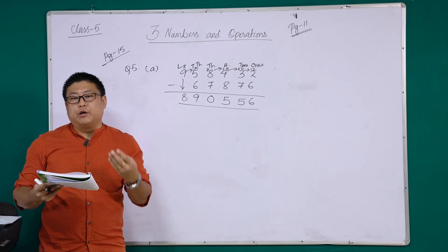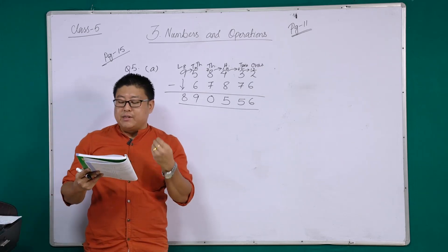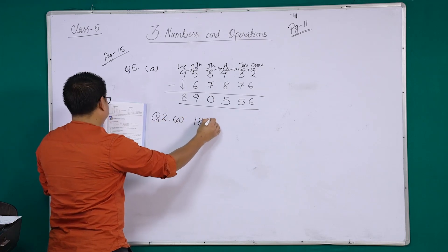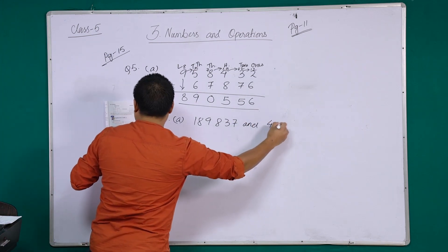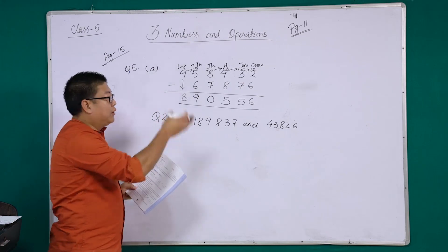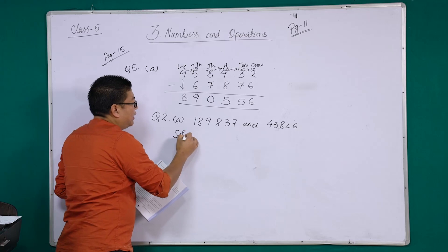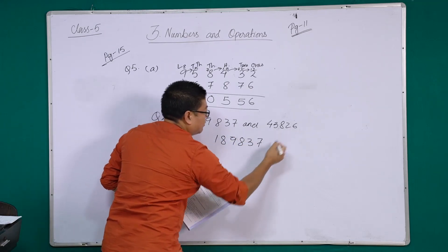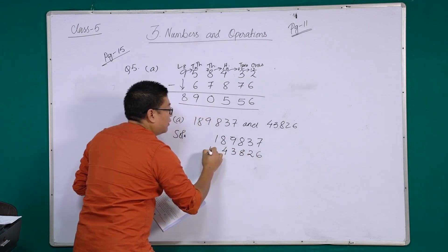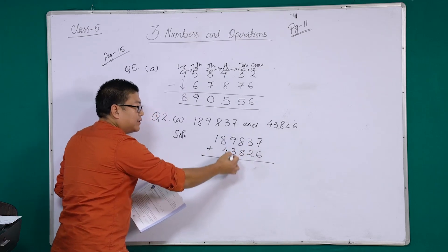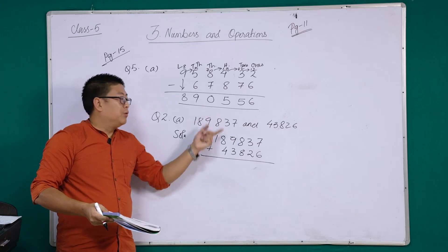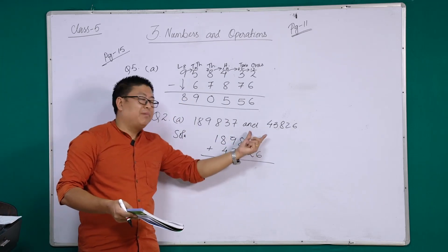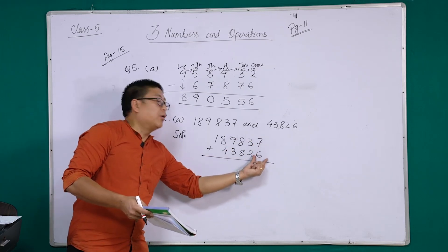There may be questions that tell you to arrange numbers in columns. For question number two: arrange the following numbers in columns and find their sum. Write down the first number, then when writing the second number, start from the ones place and align correctly — ones with ones, tens with tens, hundreds with hundreds, thousands with thousands, ten thousands with ten thousands. This is how you add numbers in columns. Simply add all the numbers according to their place values.